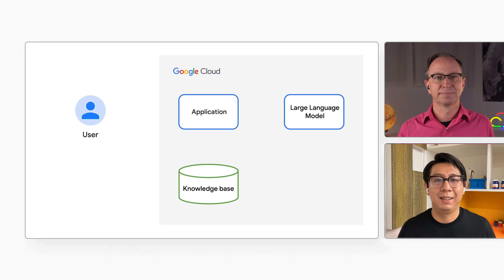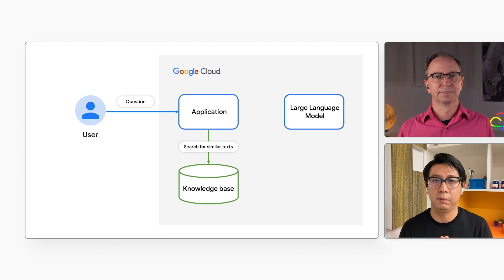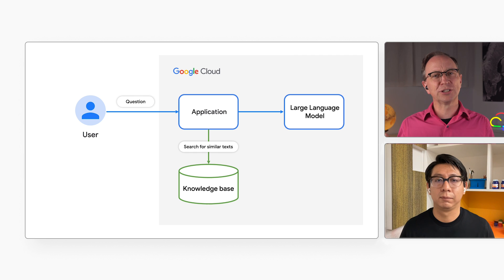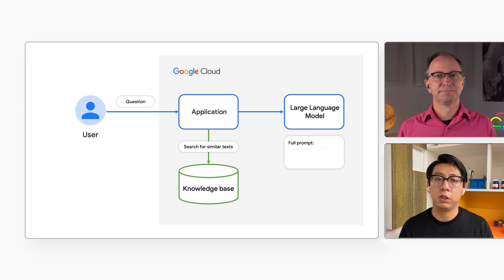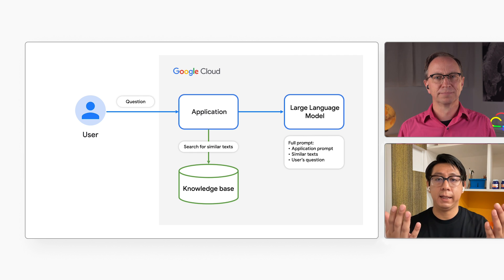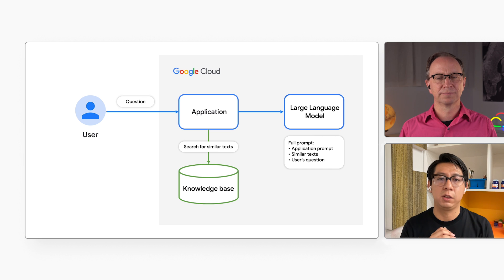Here's how it works. The user will enter a question in a web application. The web app will run a vector search in its database to find texts that are similar to the user's question. And that's the retrieval part of Retrieval Augmented Generation? That's right. The web app will then build a prompt for the large language model. The prompt will include instructions for the LLM, like what kind of persona it should use, as well as the texts found in the vector search. That's the generation part of Retrieval Augmented Generation.